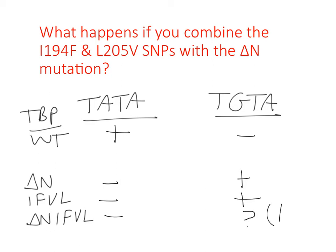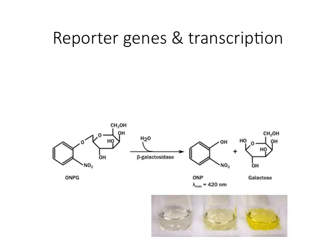Delta N alone gives transcription. The two point mutations alone give transcription. So the question is: when you combine those two mutations, do you get even more transcription — super transcription? That's the question, and this is where reporter genes come in. We need some way to measure whether or not transcription is happening.